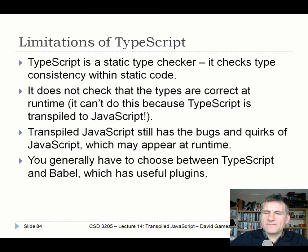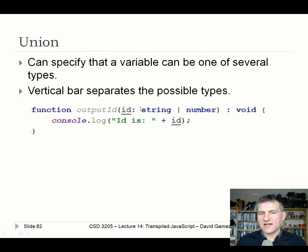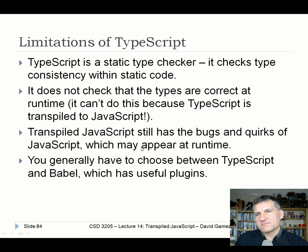There are some limitations. TypeScript is a static type checker — it only checks type consistency within static code and doesn't check that types are correct at runtime. It can't do runtime checking because TypeScript is transpiled to JavaScript, and the type annotations are stripped out during transpilation. So the actual JavaScript running at runtime won't be checking types. The transpiled output can also be quite complicated JavaScript that's difficult to debug at runtime, particularly with large amounts of code.